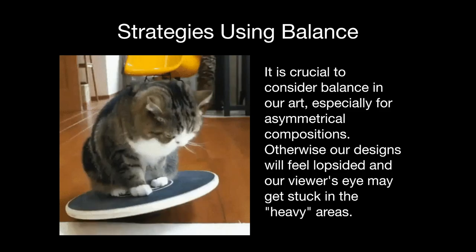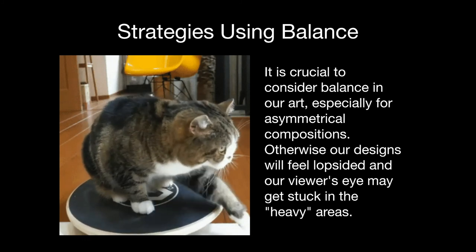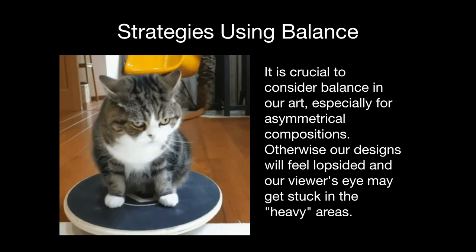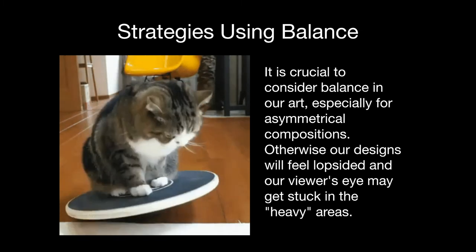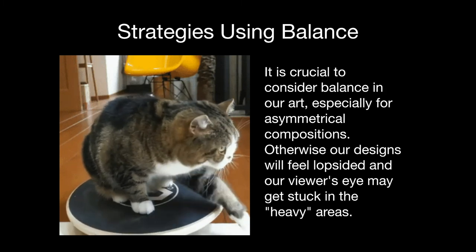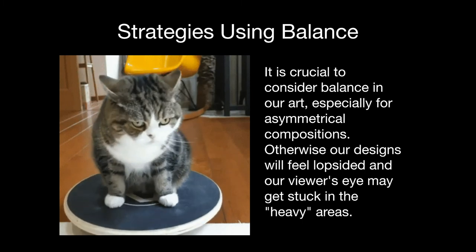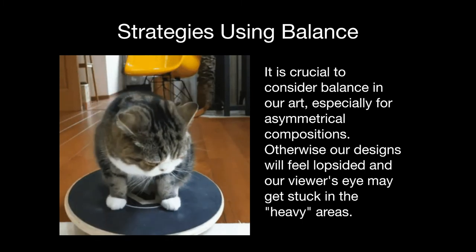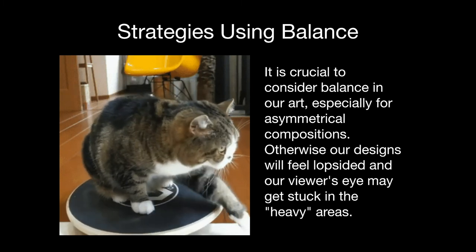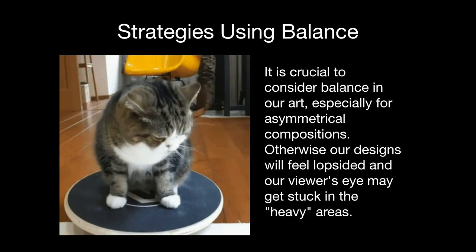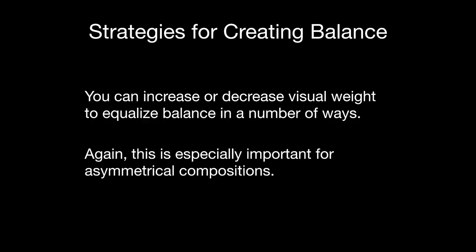The important thing is that we have these different types of balance, but at the end of the day we have to have strategies for actually equalizing that visual weight. If we don't, our designs end up feeling lopsided and our viewer's eye gets stuck in the heavy areas. Viewers are impatient — they don't want to take the time to get out of the gravitational pull of one part and go to another part of your composition. You can either increase or decrease visual weight, and this allows you to equalize visual balance. This is especially important for asymmetrical compositions, which is what we'll be making for our next project.